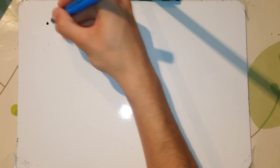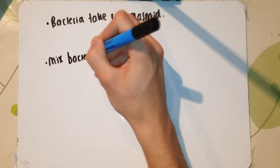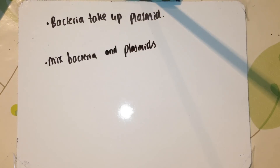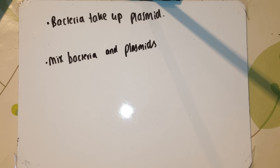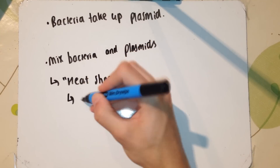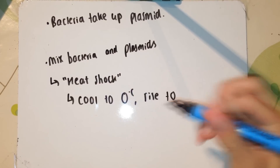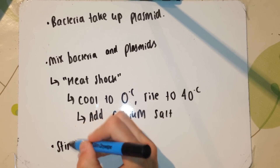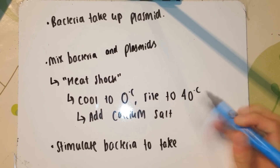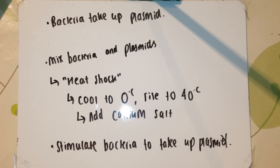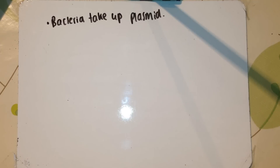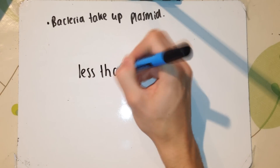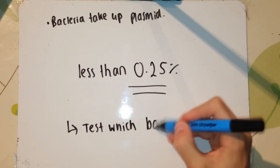Once you've made these plasmids, how do we get the bacteria to actually take them up? You mix the bacteria, the plasmids, the ligase, and all the different enzymes and genes you want all together. The problem is you get different amounts of bacteria taking up different plasmids. The main method is called a heat shock — you cool the bacteria down to zero degrees and then rapidly heat it back up to 40 degrees Celsius. With the addition of calcium salts, this causes the bacteria to take up more plasmids. In the real world, less than 0.25% of plasmids are actually taken up, so we need to test which bacteria have taken up a plasmid.